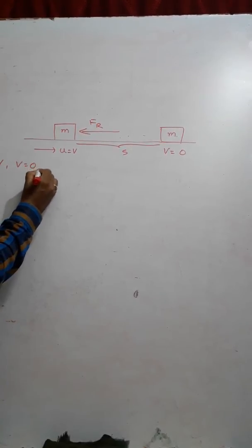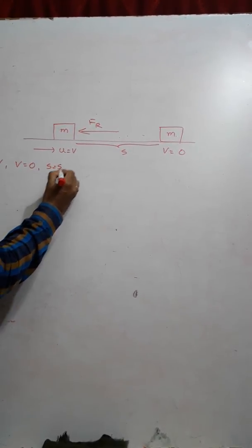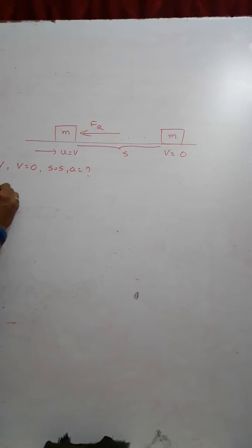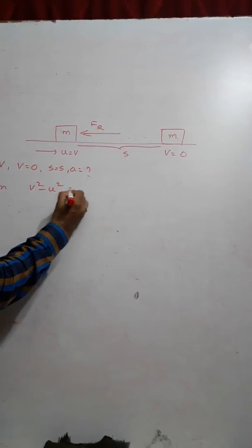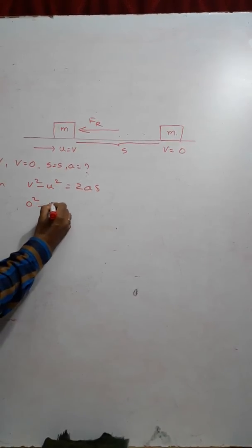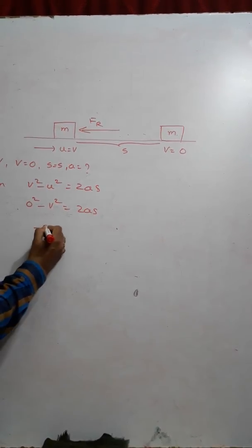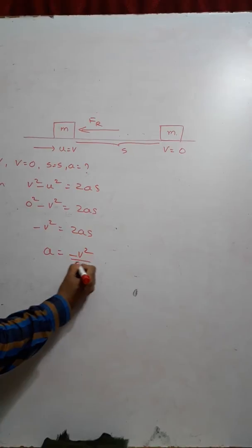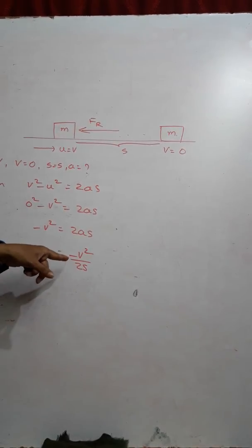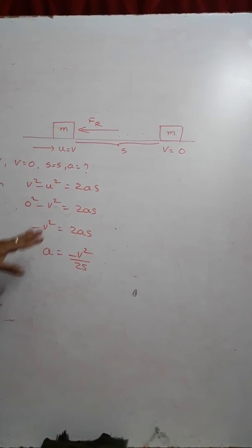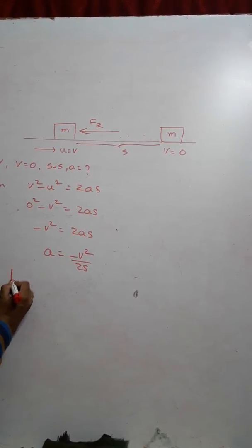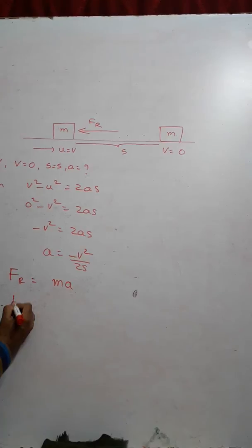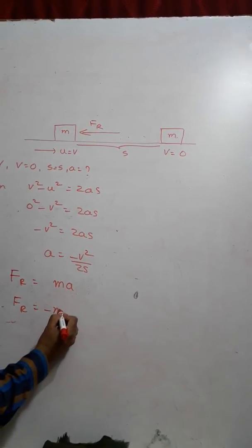Initial velocity U is equal to V, final velocity is equal to 0, displacement is S, and acceleration is A. From V² − U² = 2AS: 0² − V² = 2AS, so minus V² = 2AS, and A = −V²/(2S). The negative sign indicates the body has negative acceleration or deceleration. From Newton's second law, opposing force F = MA = −MV²/(2S).